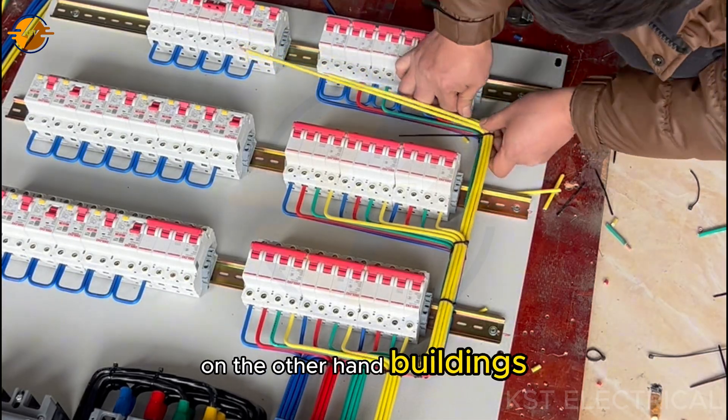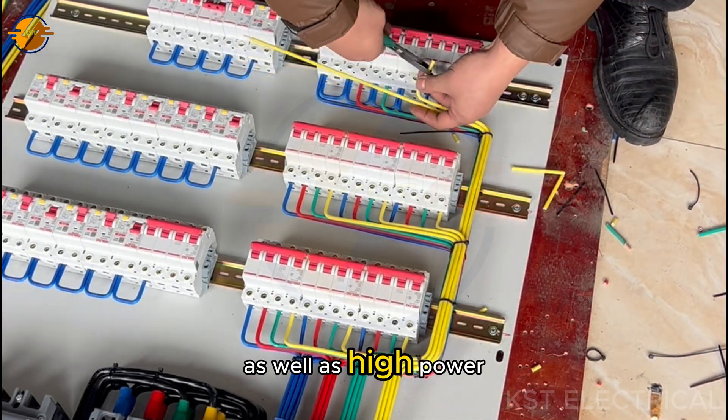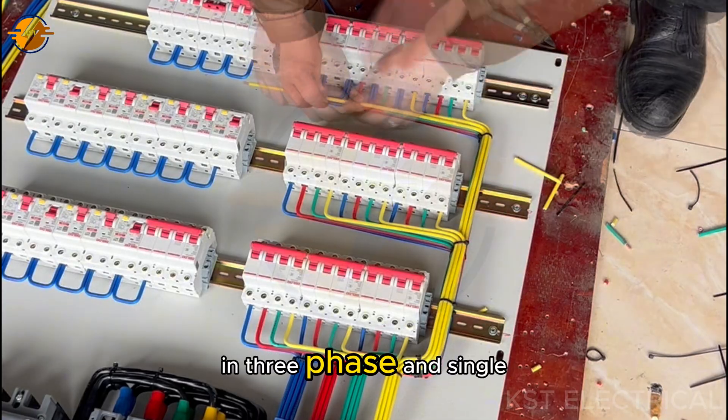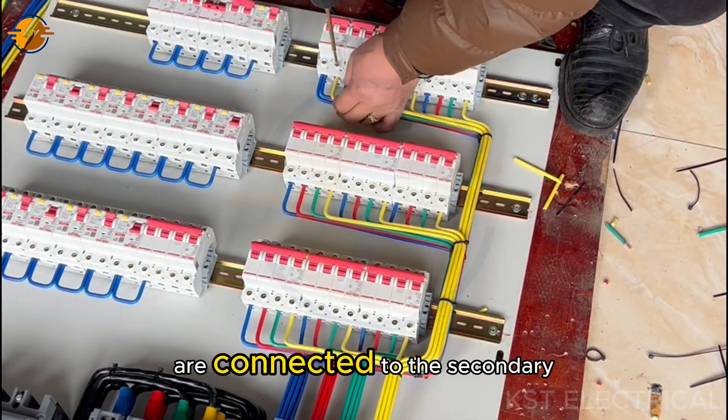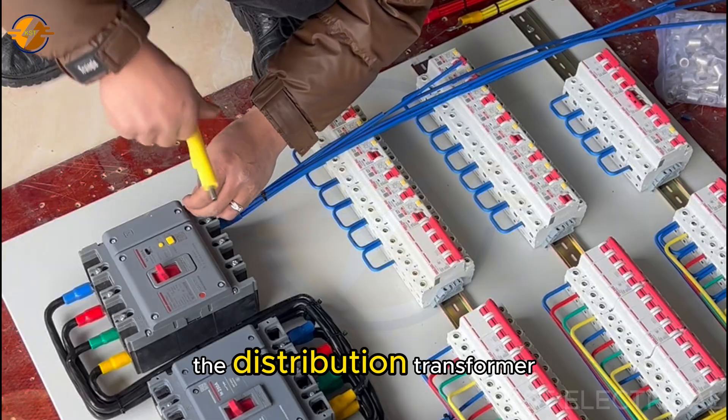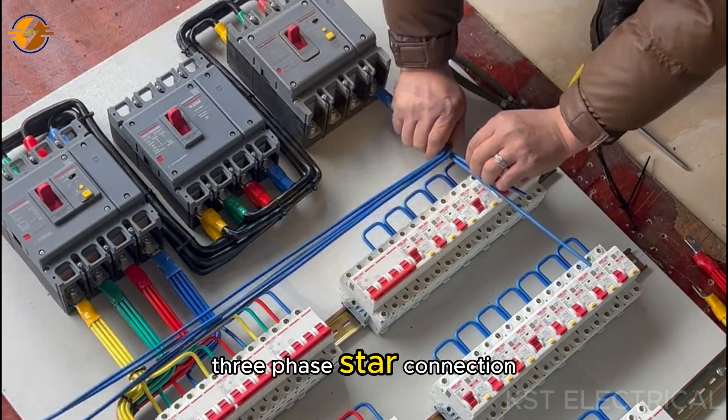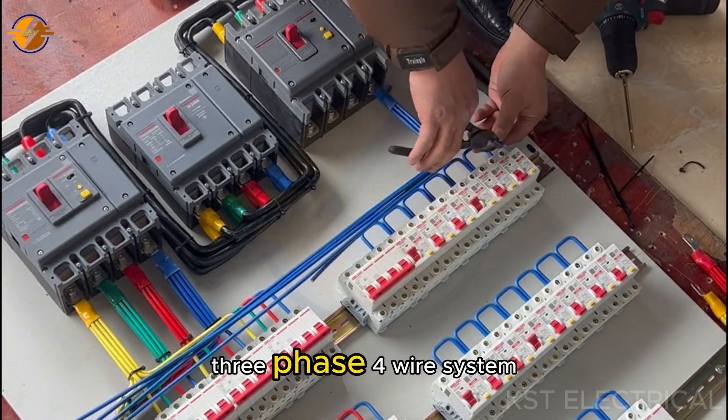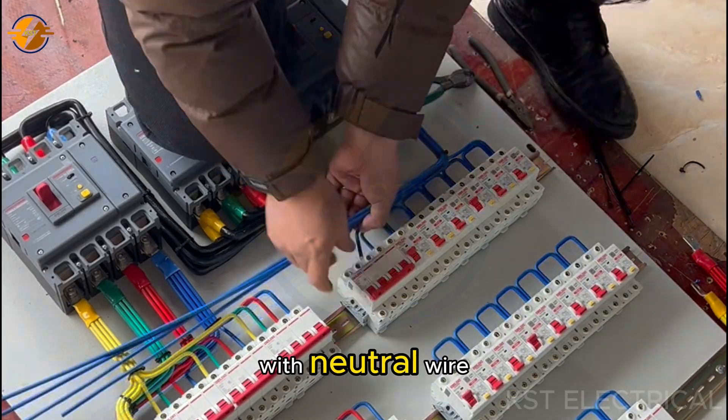On the other hand, buildings that need low as well as high power in three-phase and single-phase are connected to the secondary of the distribution transformer. This way, they get a three-phase star connection three-phase four-wire system with neutral wire.